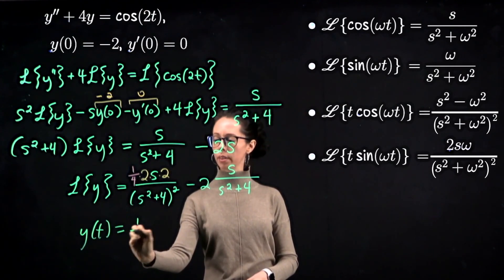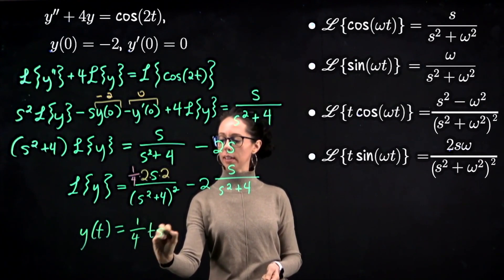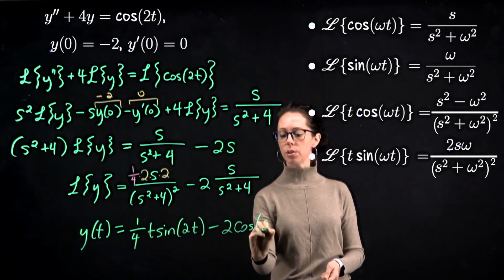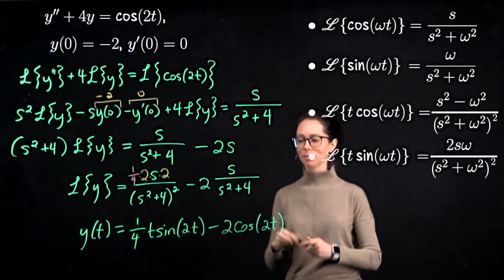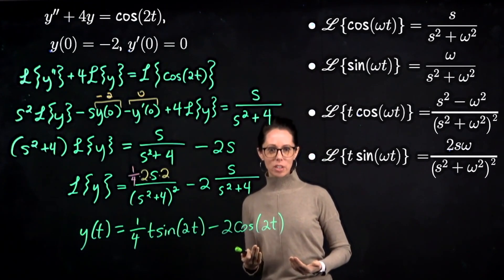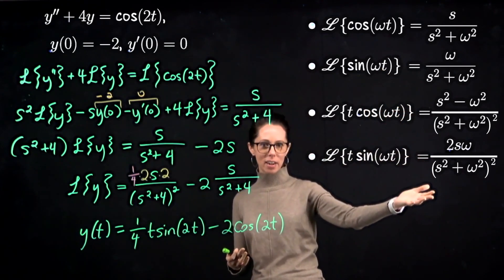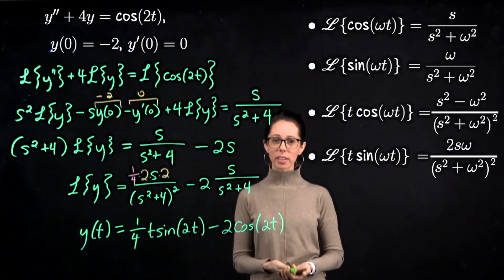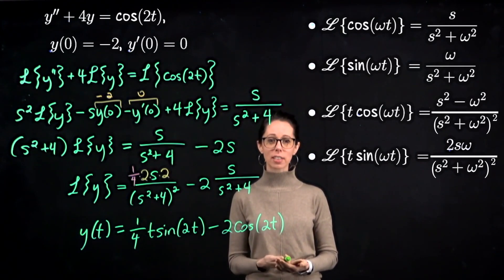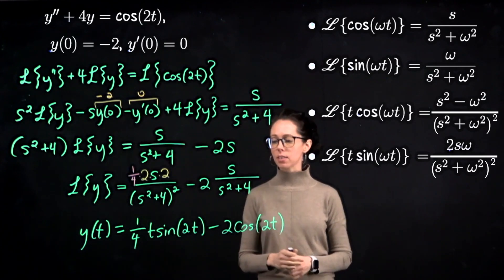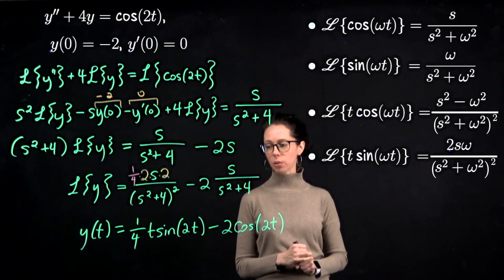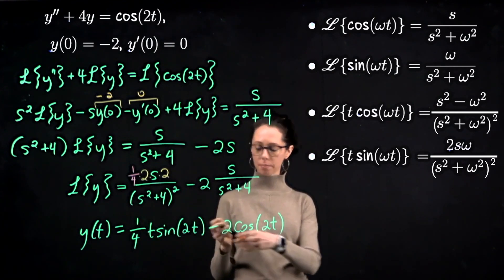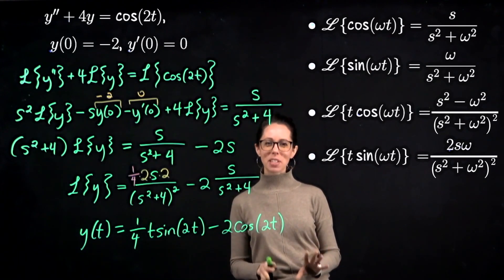We're ready to state the solution: y equals one-fourth t sine of 2t minus 2 cosine of 2t. By solving this using the Laplace transform with the formulas we derived, it never required us to stop and explicitly recognize that resonance was happening. The resonance shows up in the solution through this factor of t, which causes the oscillating part to grow with increasing amplitude as time goes to infinity.